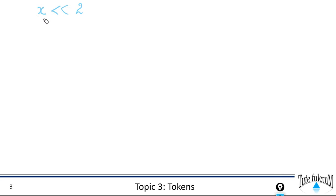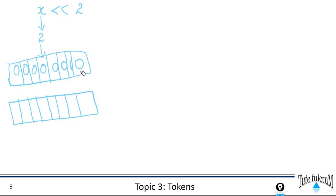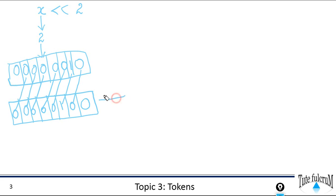We have X which needs to be shifted towards the left by two bit positions. Let's take X as two. Two in binary form is 010, and as an eight-bit value it is 00000010. In left shifting, we start from the LSB and shift towards the left. Shifting by one bit gives 00000100 — the vacant position is padded with zero, and the MSB is discarded.